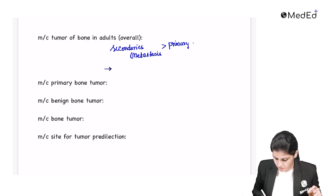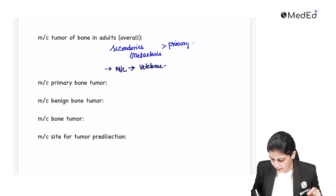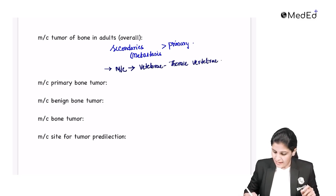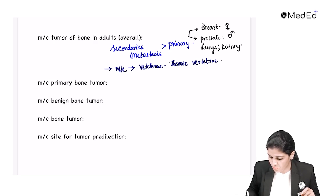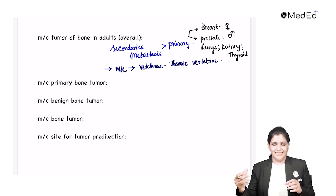Secondaries are most common. The most common bone which shows secondaries is the vertebrae, specifically the thoracic vertebrae. The primary sources of secondaries are: breast in females, prostate in males, lungs, kidney, and thyroid. These are the five areas from which the primary spreads to produce secondaries.